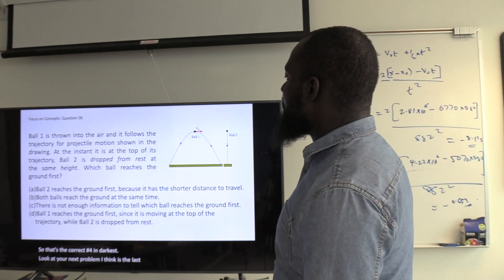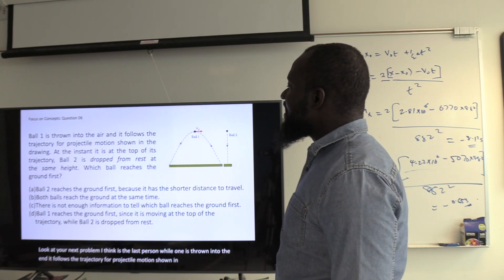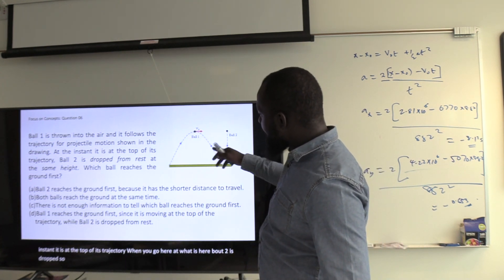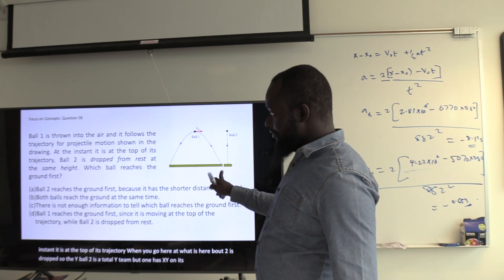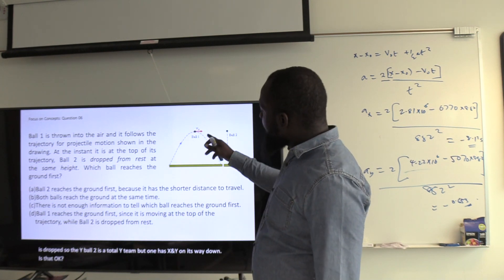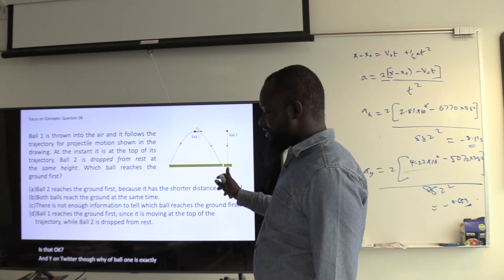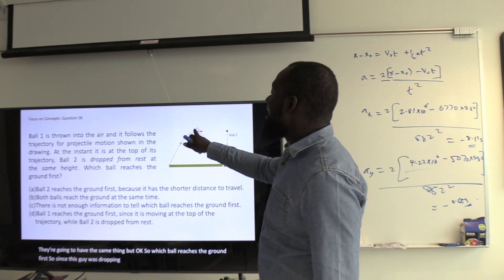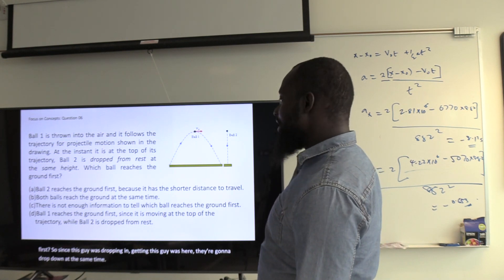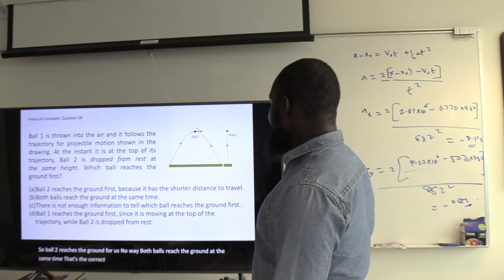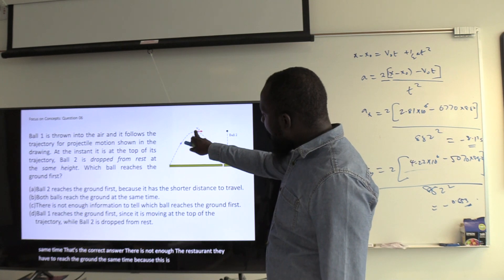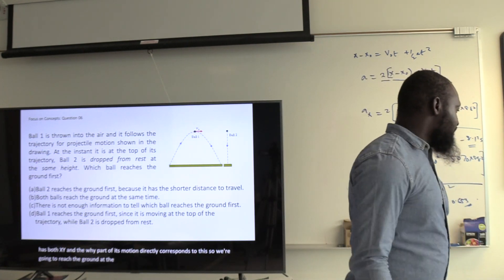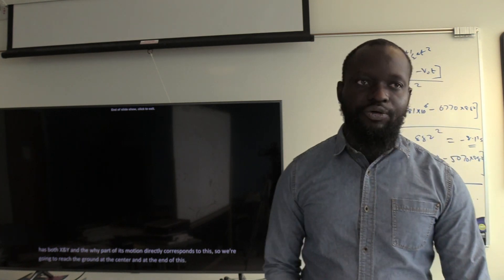Ball 1 follows projectile motion; at the instant it reaches the top of its trajectory, ball 2 is dropped from the same height. Ball 1 has both x and y components on the way down; ball 2 has only y-motion. The y-motion of ball 1 is exactly the same as ball 2's motion. So both balls reach the ground at the same time. That's the end of homework 2.